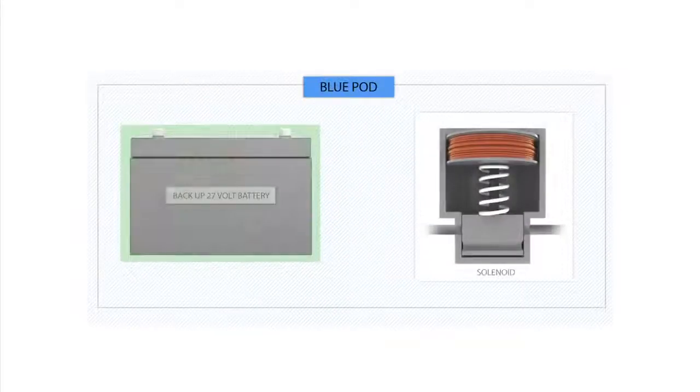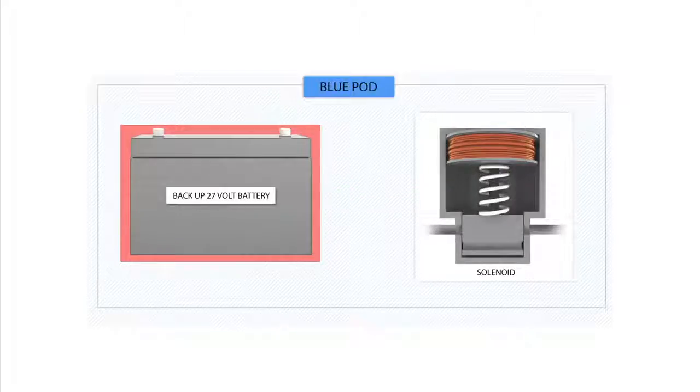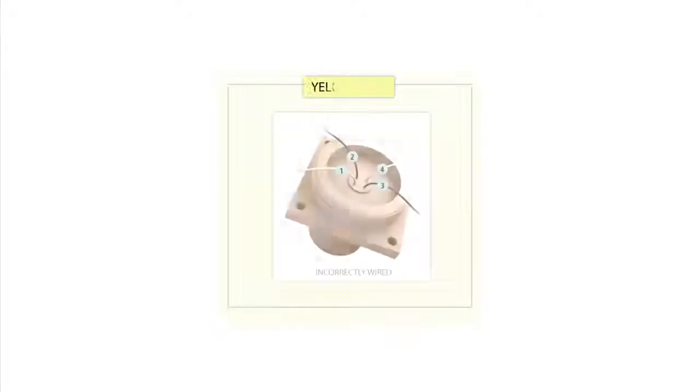However, evidence indicates the Blue Pod had been miswired at some time before the BOP was lowered onto the seafloor. This caused the pod's twenty-seven-volt battery to drain and made it impossible to operate the solenoid valve for the blind shear ram on the night of the accident.